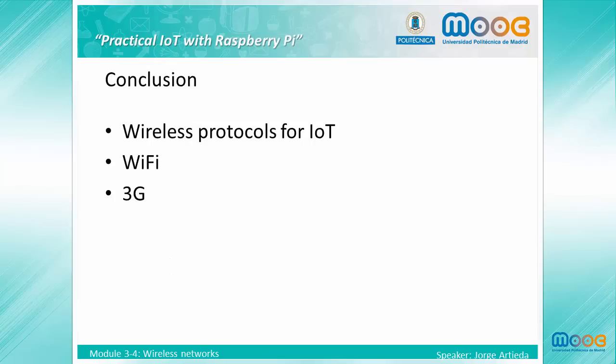In this lesson we have seen that there are a great number of wireless protocols used in the Internet of Things. We have also seen that our Raspberry Pi provides Wi-Fi connection using its onboard chip, and that another common option is a 3G USB stick. With this lesson we have finished Module 3. In the next module we will learn how to interact with the world using sensors and actuators.